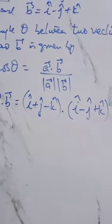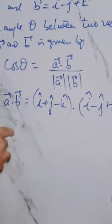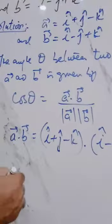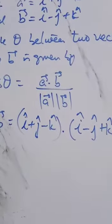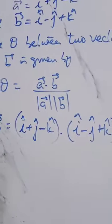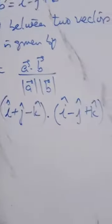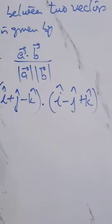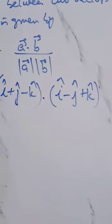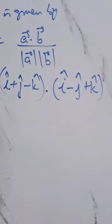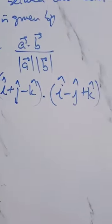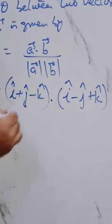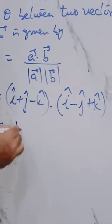You know that i dot i is one, j dot j is one, and k dot k is also one. But i dot j, j dot k, and k dot i are always equal to zero. So to find the dot product of the two vectors, we have i dot i that is one.